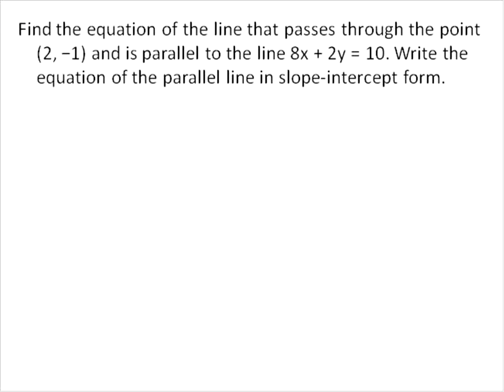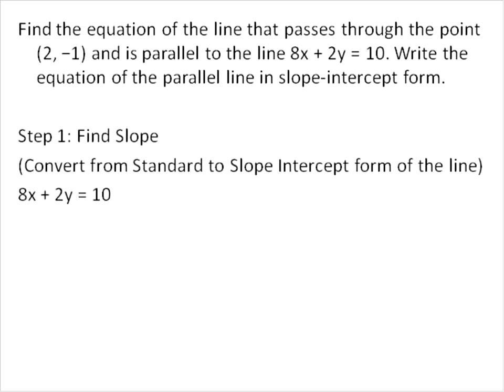We're going to find the equation of a line that passes through the point (2, -1) and is parallel to the line 8x + 2y = 10. We're going to write the equation of the parallel line in slope-intercept form. With this there are three major steps.